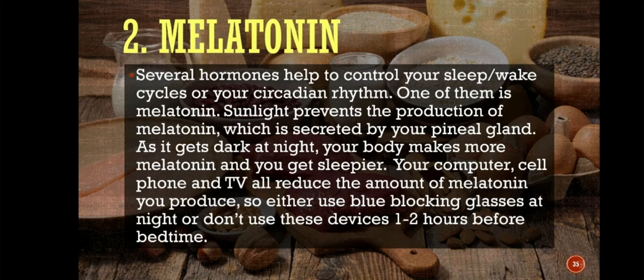Number 2: melatonin. Several hormones help to control your sleep-wake cycles or circadian rhythm, and one of them is melatonin. Sunlight prevents the production of melatonin, which is secreted by your pineal gland. As it gets dark at night, your body makes more melatonin and you get sleepier. Computers, cell phones, and TVs all reduce the amount of melatonin you produce.